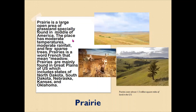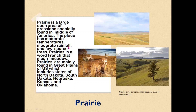Number third is the Prairie. A Prairie is a large open area of grassland especially found in the middle of North America — both in the United States and Canada. The Prairie has a moderate temperature, moderate annual rainfall, and sparse trees, dominated by grass.